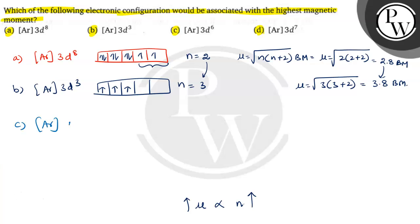Here, what has been given? Argon 3d6, d orbitals. 1, 2, 3, 4, 5, and 6. The number of unpaired electrons are 4. So mu is equal to root over 4 into 4 plus 2, root 24, and that is equal to 4.8 Bohr magnetons.